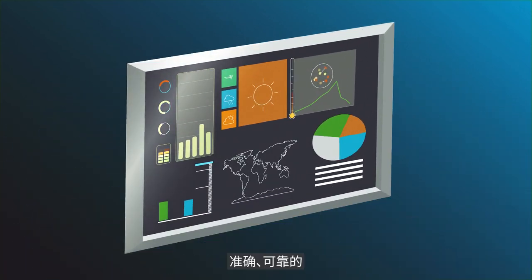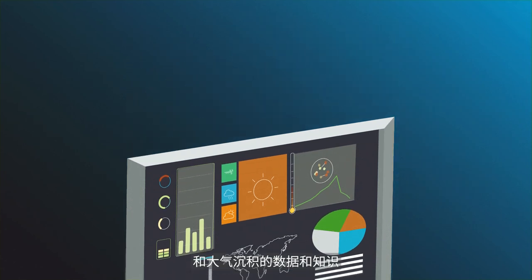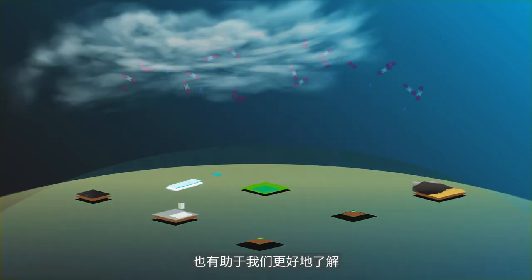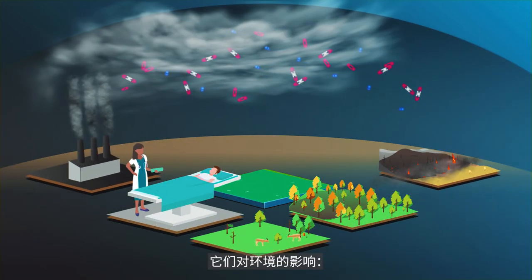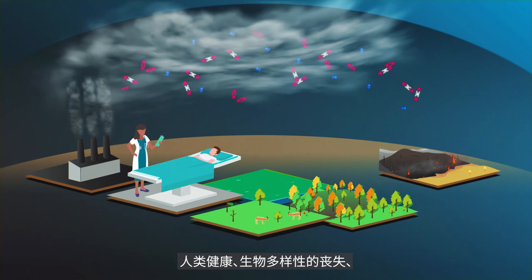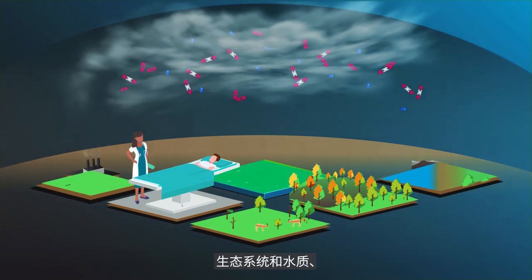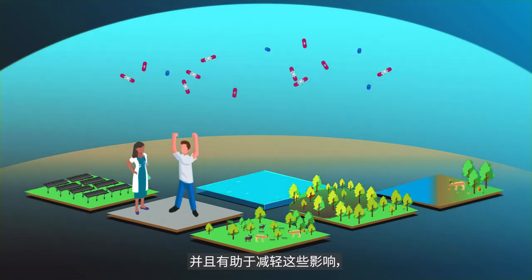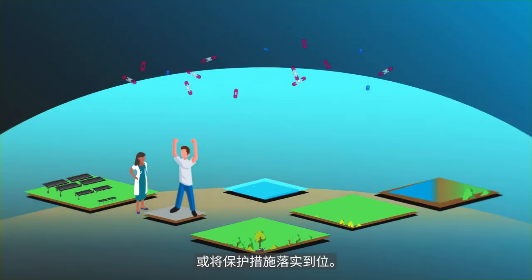Accurate, reliable data and knowledge about the levels of pollution and atmospheric deposition also help us to better understand their impacts on the environment, human health, biodiversity loss, ecosystems and water quality, and to either mitigate those impacts or put protective measures in place.